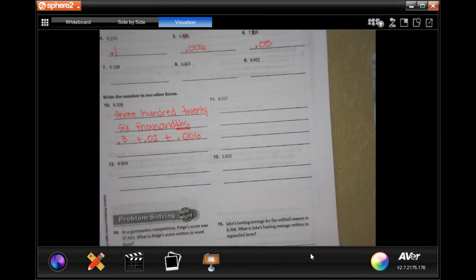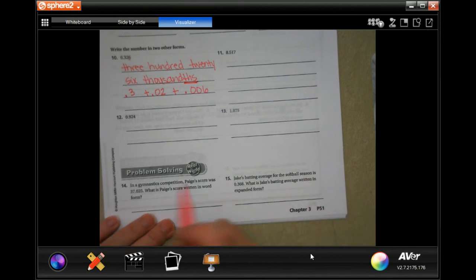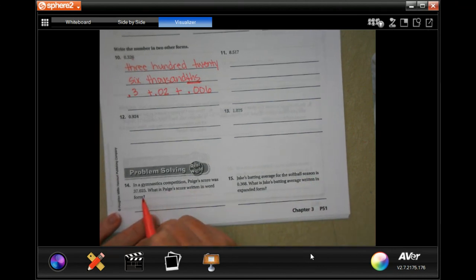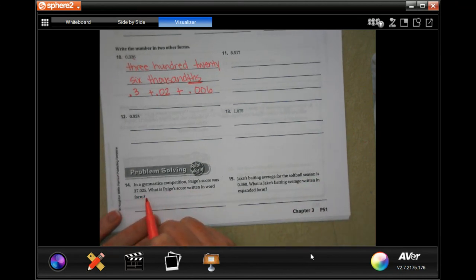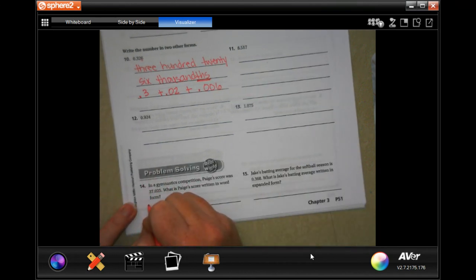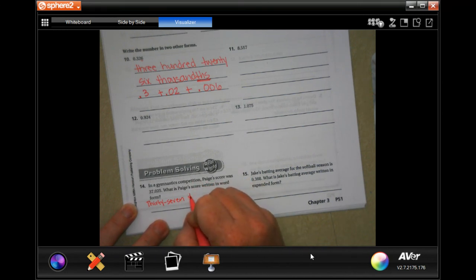In a gymnastics competition, page of score was 37.025. What is pages for written in word form? So goodness, they didn't give you very much room for this one. Thirty seven and twenty.